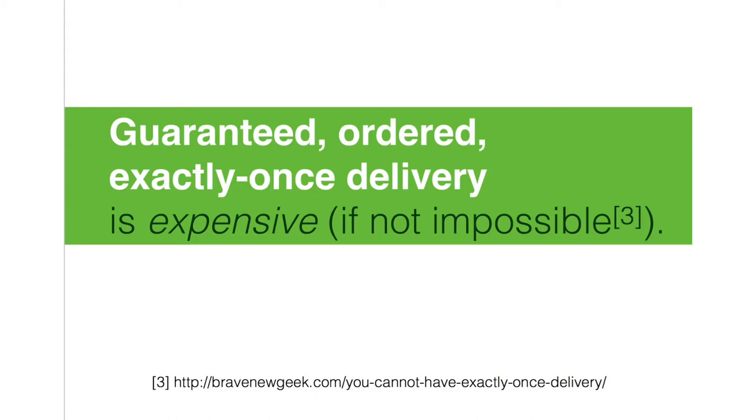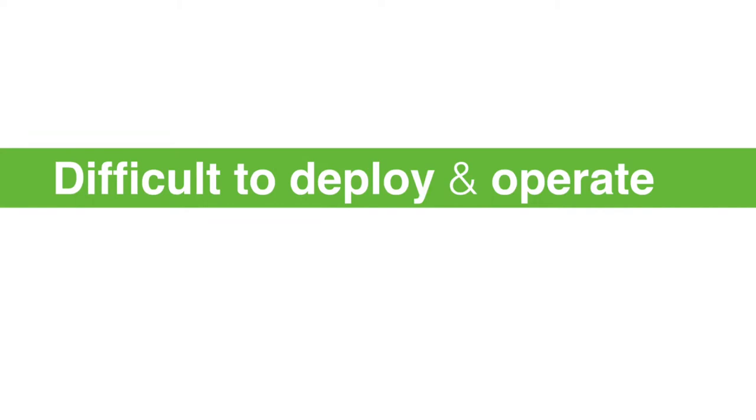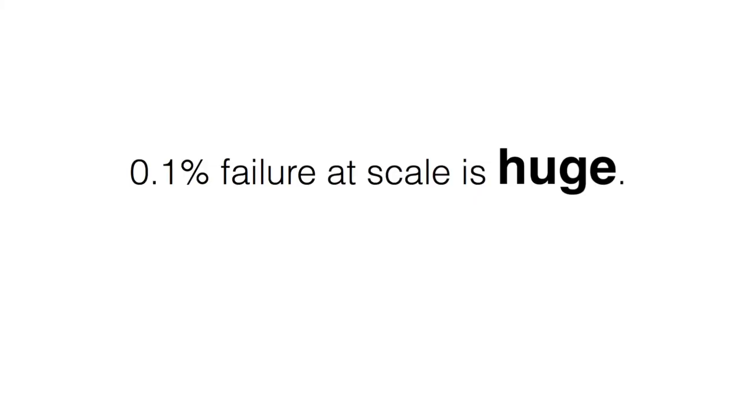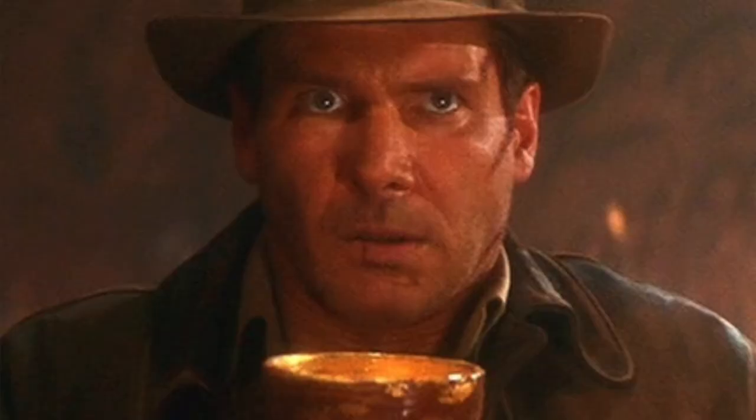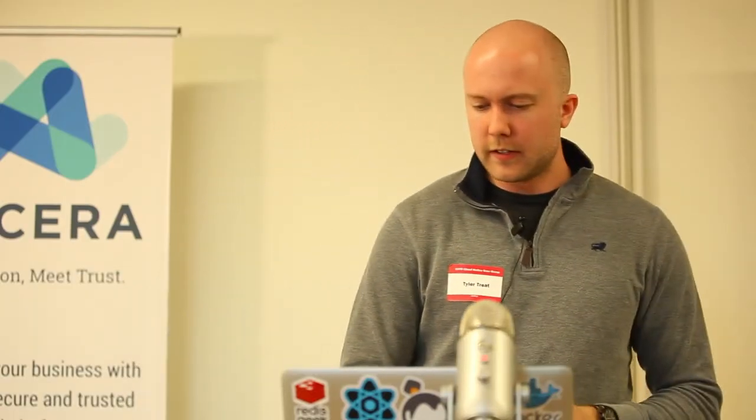Things like guaranteed, ordered, exactly-once delivery are really expensive to provide. Depending on your definition, they might even be impossible. Regardless, you usually end up with something that's over-engineered, complex, difficult to deploy and operate, fragile, and ultimately slow. At large scale, guarantees are going to give out — that's really the only thing that is guaranteed about distributed systems. Even if failures are a small percentage, at large scale it's still massive. It's kind of a holy grail we're after. When we finally think we've got it, something usually goes horribly wrong and we get paged at 2 in the morning.